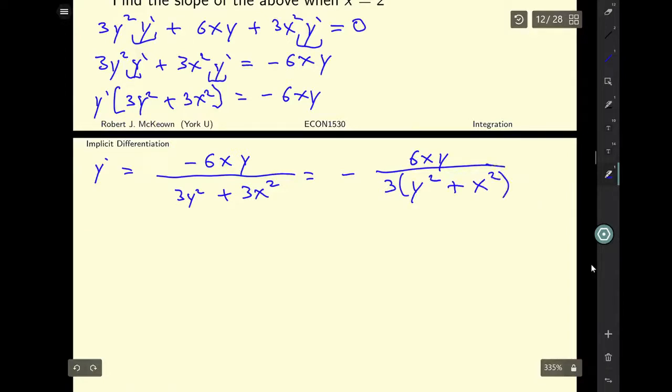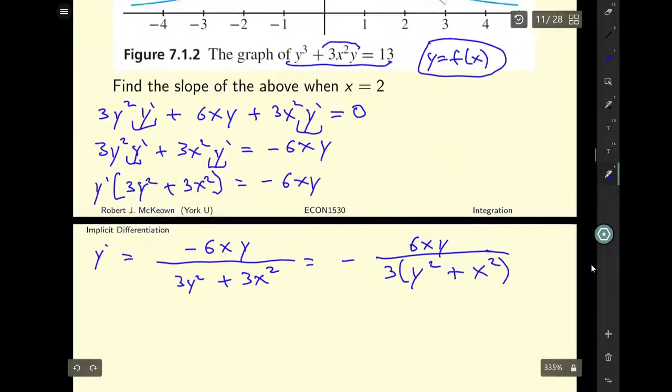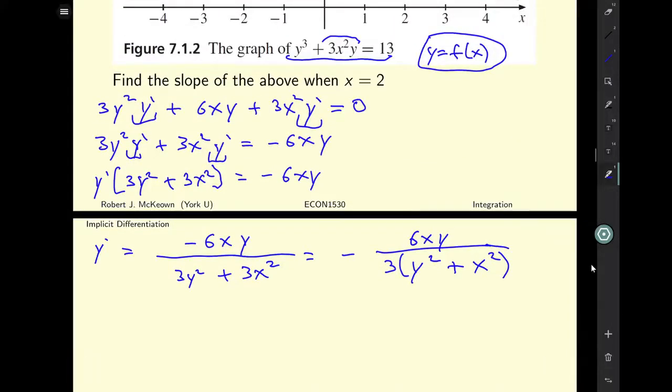I can't do anything with that. There's no way to factor that into a simpler form. And I think I've got the answer here. I found the slope using the implicit differential.